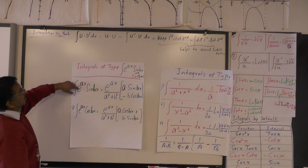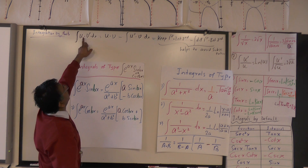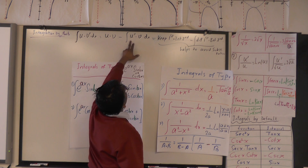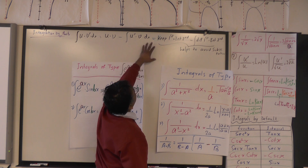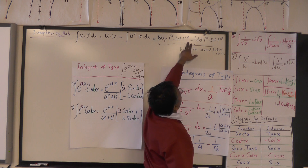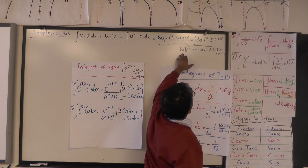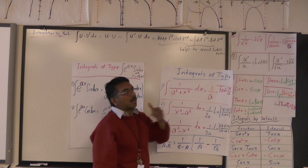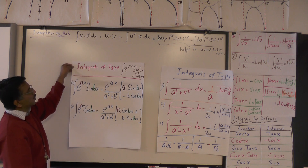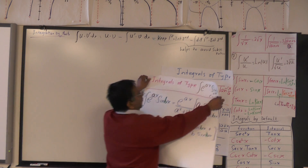Before that, let's check the formula we are going to use to prove this. We are going to use integration by parts: integral of u times v' equals u·v minus integral of u'·v. This is equivalent to: keep the first, integrate the second, minus integral of differentiate first times integrate second. This formula helps to avoid substitution and makes it very easy.